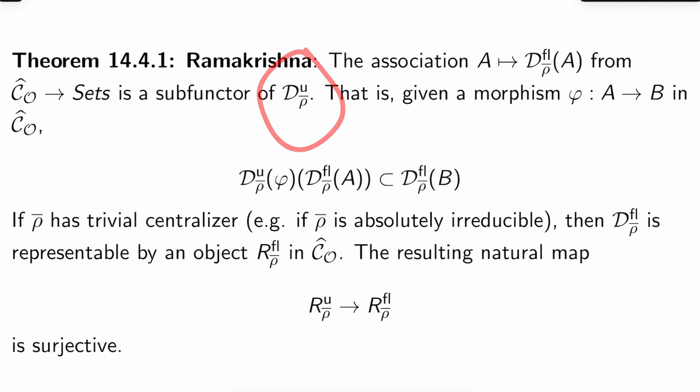And what is D^u_ρ̄ here? This is just like the universal deformation functor. So more precisely, what do we have to show? If you give me a morphism φ from A to B in this category Ĉ_O, then D^u_ρ̄(φ)(D^fl_ρ̄(A)) sits inside D^fl_ρ̄(B). So we have functoriality here.